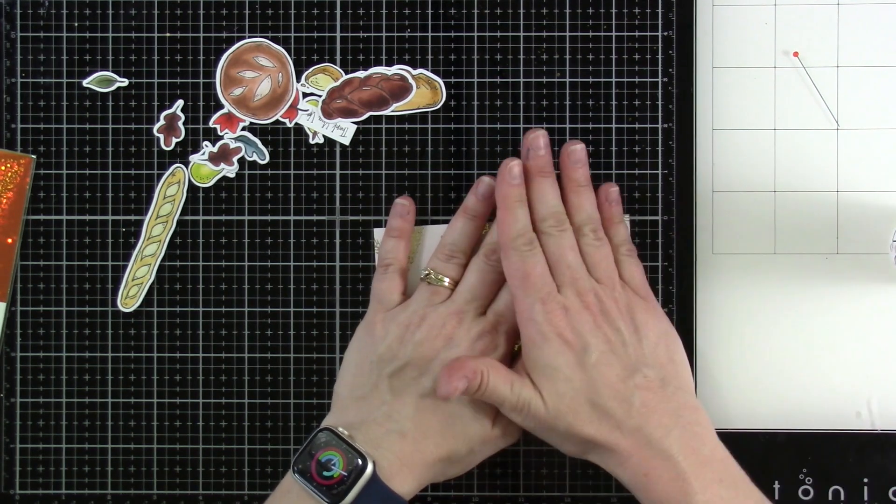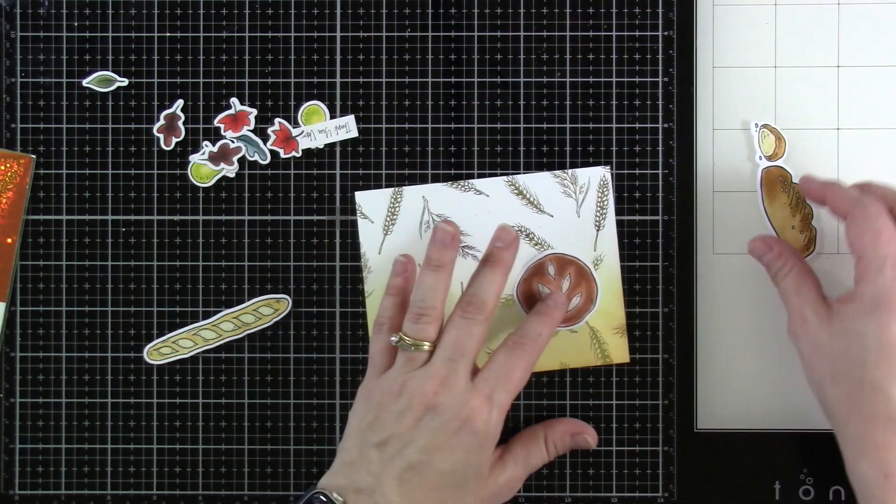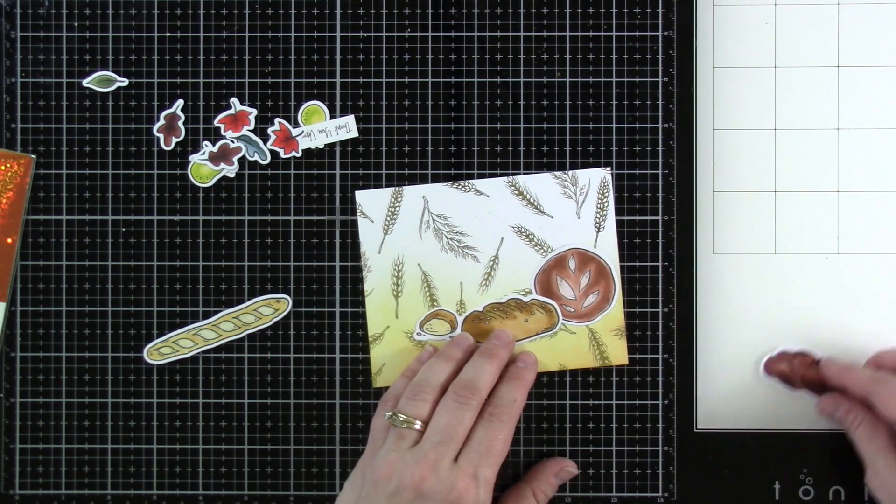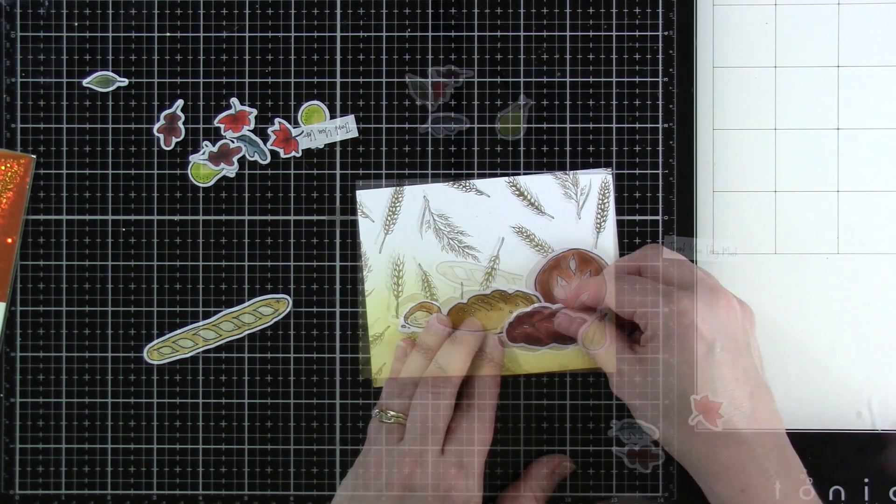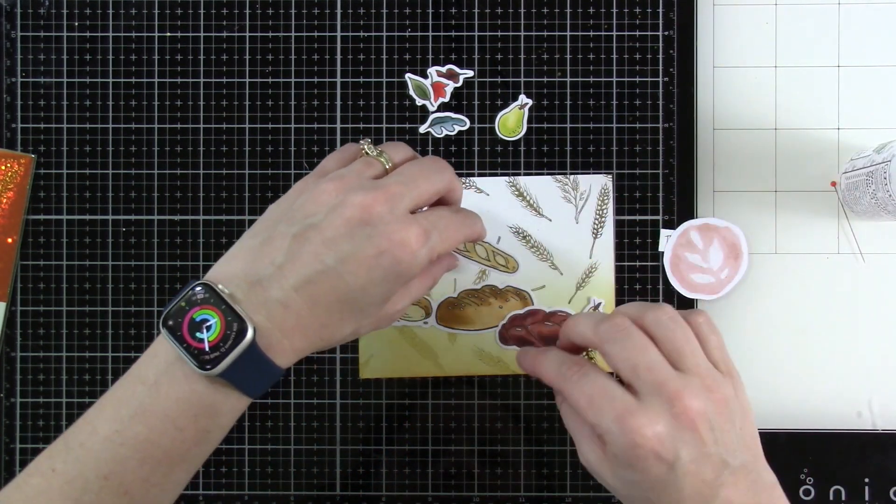And then I'm going to play around with the placement of all of those images. I wanted them all on one card. I know I stamped out everything. The leaves I did stamp out a couple different times, obviously. But I wanted all the bread on one card.